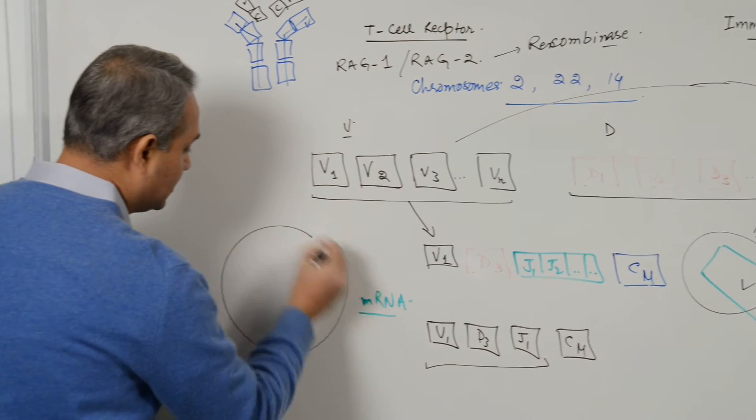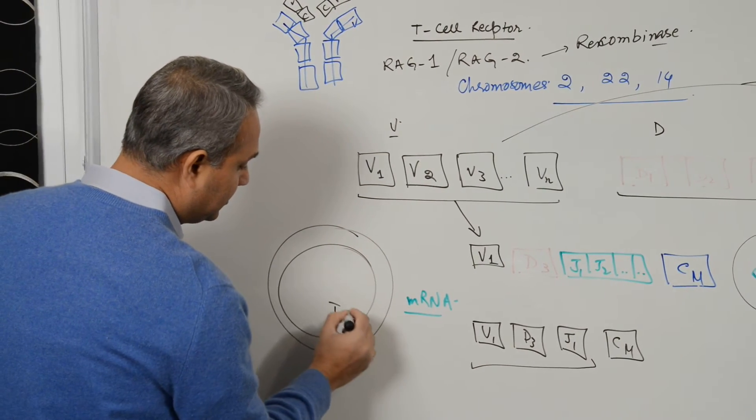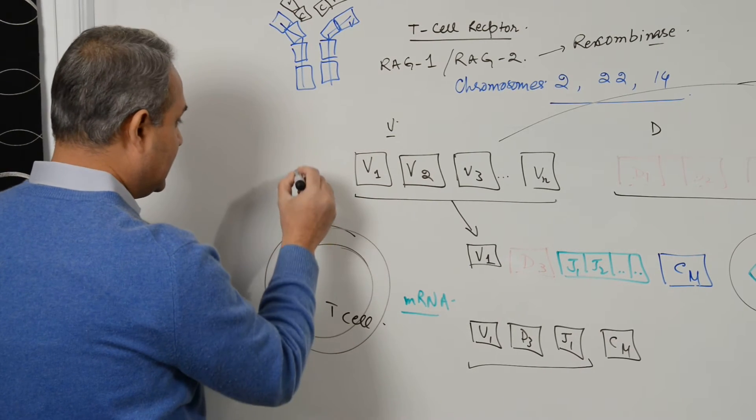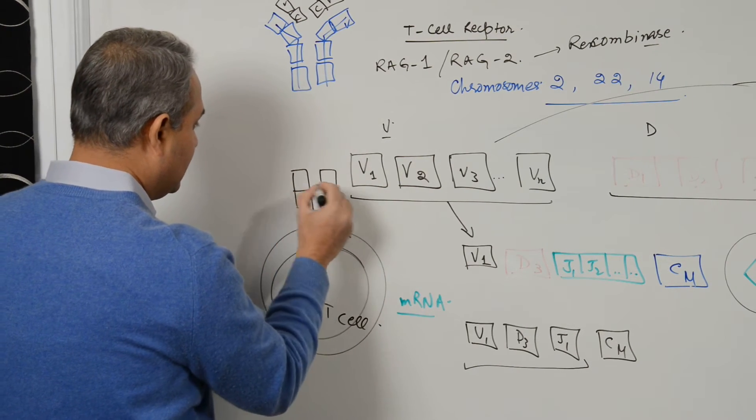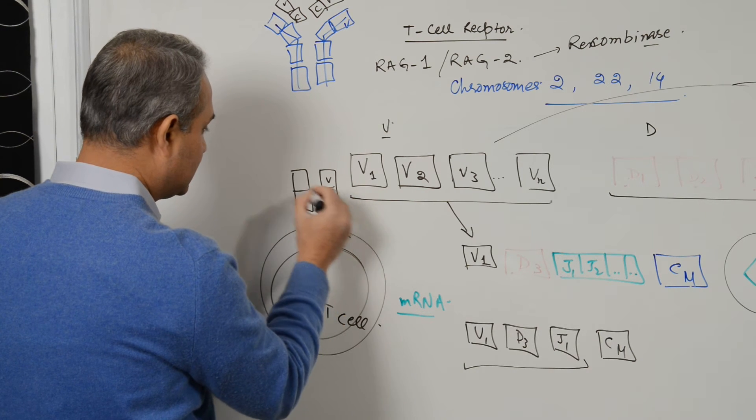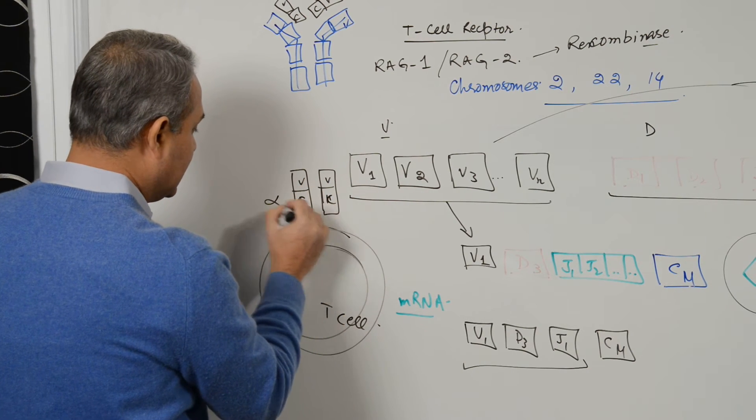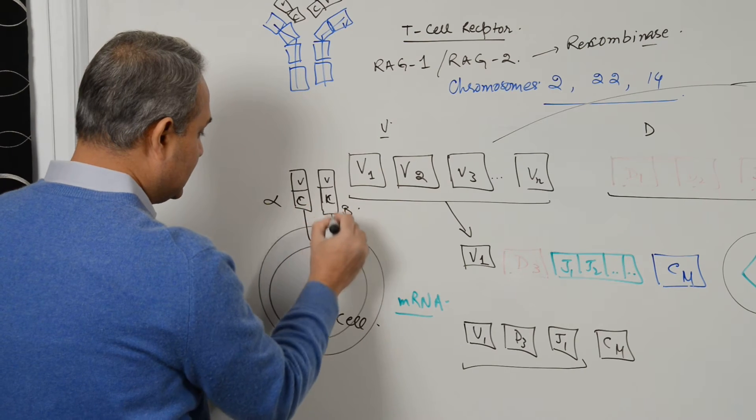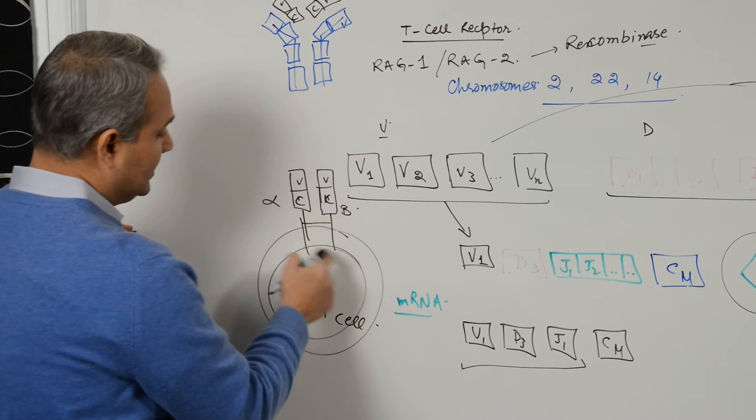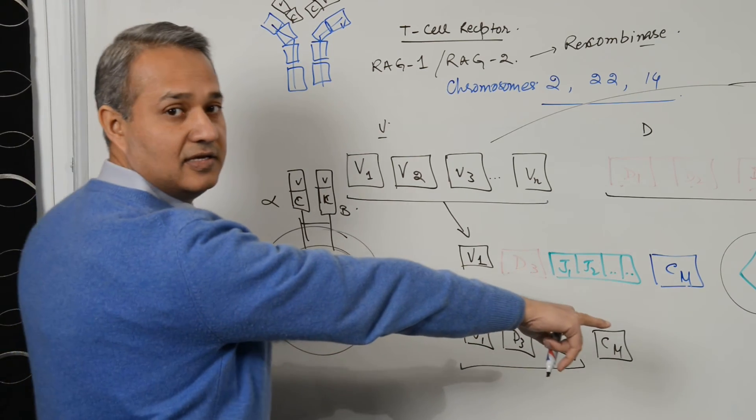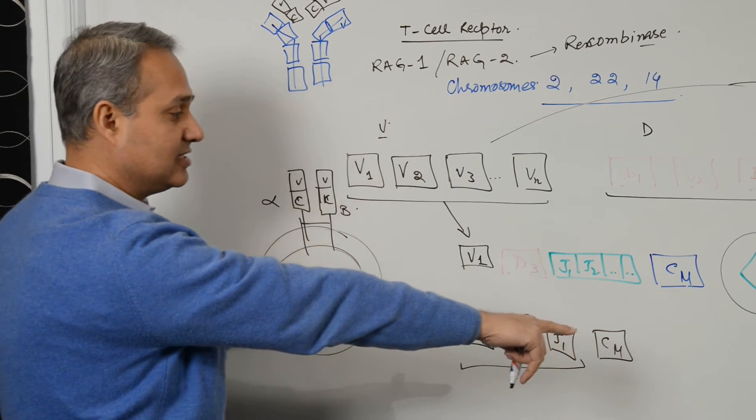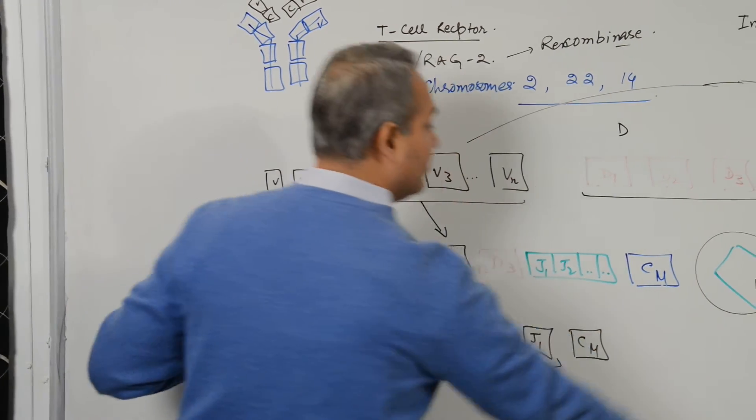So here is how the T cell receptor is. This is a T cell. The T cell receptor is a dimeric protein with V and constant regions. It has alpha or beta chains, these dimeric proteins have got this constant part. So this constant part has nothing, no functional or structural resemblance to the constant part of an immunoglobulin.